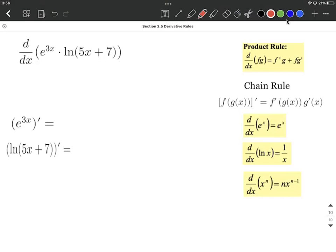To write out the product rule, I'm going to treat this first e to the 3x as though it's our f function, and the natural log as though it's our g function. So this derivative is going to be given by, as you can see, the product rule on the right-hand side: f prime times g plus f times g prime.